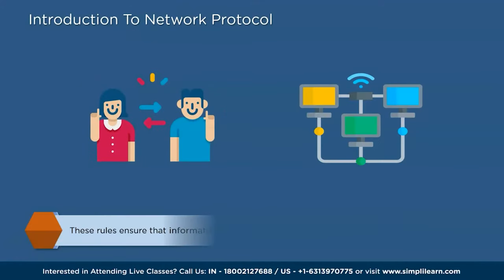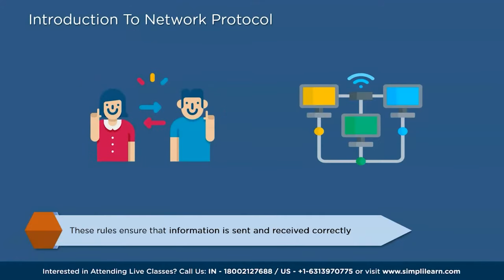Just like humans follow certain protocols when they interact with each other, network protocols define specific steps and guidelines for devices to follow. These rules ensure that information is sent and received correctly, and that all devices involved understand each other. In essence, network protocols are a way for devices to speak the same language and follow a common set of guidelines so that they can successfully share information and work together effectively.